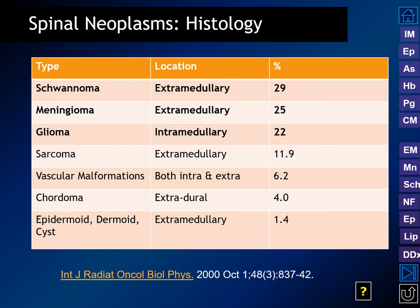In terms of relative frequency of spinal cord neoplasms, the top three have similar frequency. Schwannomas and meningiomas, which are extramedullary, come in at almost 30% and 25%. Intramedullary gliomas as a group represent a little more than one-fifth of spinal cord masses. We also have vascular malformations, chordomas as a classic extradural lesion, and in the subarachnoid space, epidermoid and dermoid cysts.